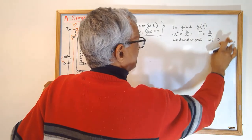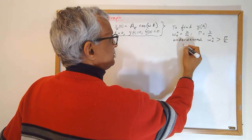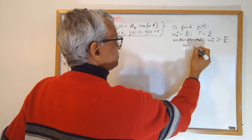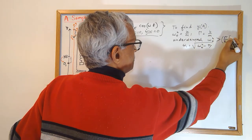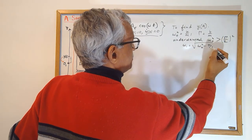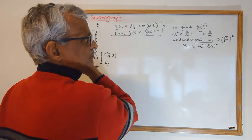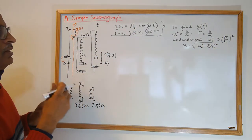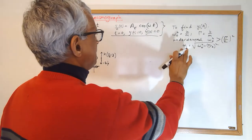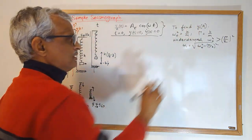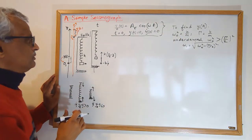Under the underdamped condition, we have a frequency ω₁ = √(ω₀² − (γ/2)²). We'll introduce this and make use of it in just a minute. Those are the parameters we will use.